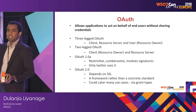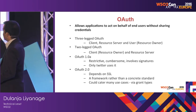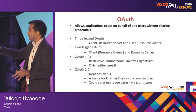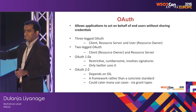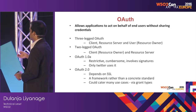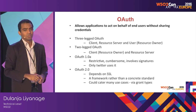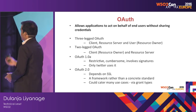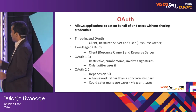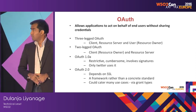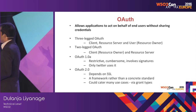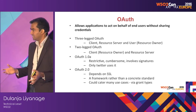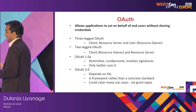Three-legged means there are three parties: the client — the app trying to act on behalf of a user; the resource server where the APIs and actual resources are hosted; and the actual end user who is the owner of the resource. In two-legged OAuth there are only two parties — the client and the resource server. For example, a weather API or a stock quote API that doesn't need to act on behalf of a user.